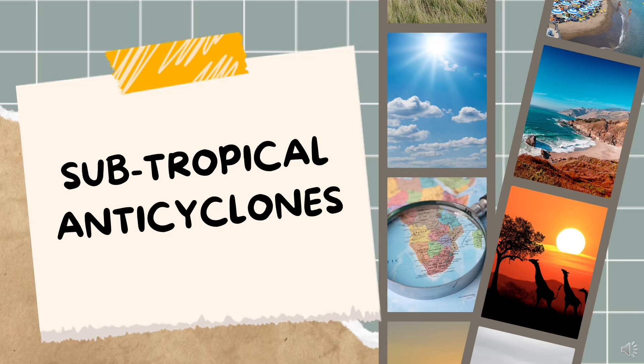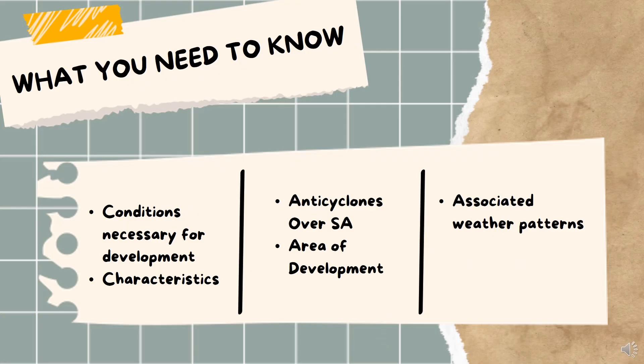Hello, Grade 12! Welcome to today's lesson. We will be studying subtropical anticyclones. From the title, we can already tell what's going on. 'Sub' means below the tropics, giving us an idea of where they occur. We just learned about tropical cyclones, and since these are called anticyclones, they are in some way opposite to tropical cyclones. Let's see if that prediction is correct.